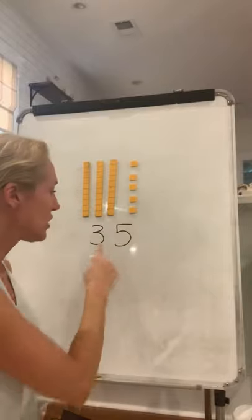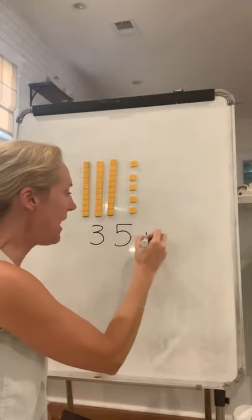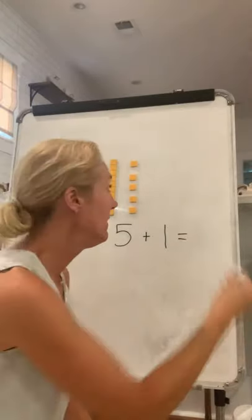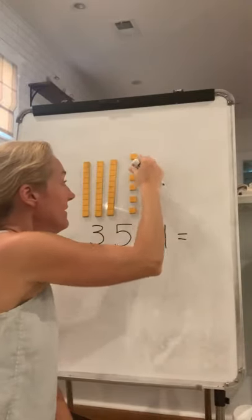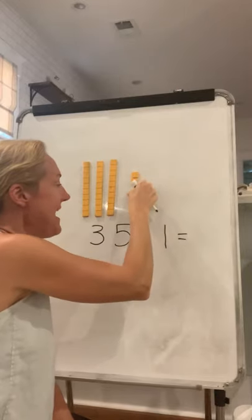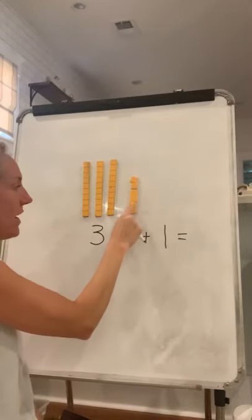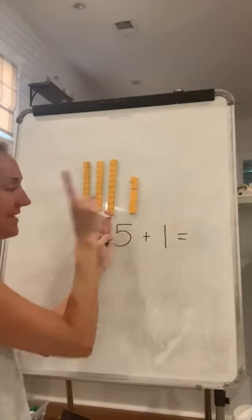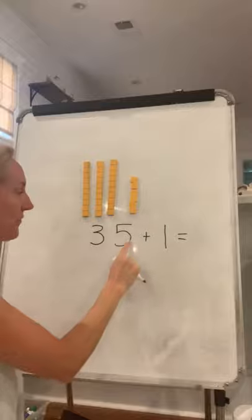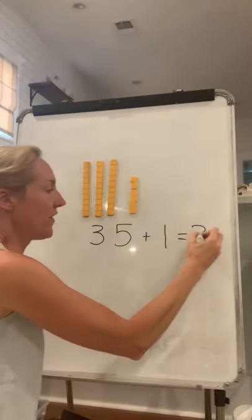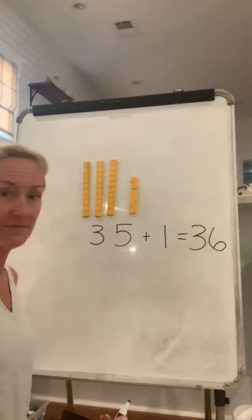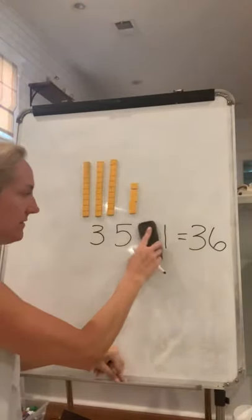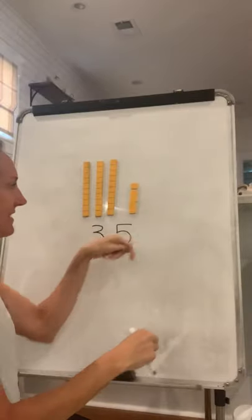What is 35 plus one? I just want to add one more. I added one more. Now I have six ones. I'm just changing the ones — it's getting one more, so it's going from five to six. So now I have 36. That was adding and changing the ones. I just went to the next number, 36.